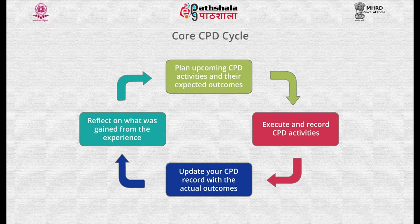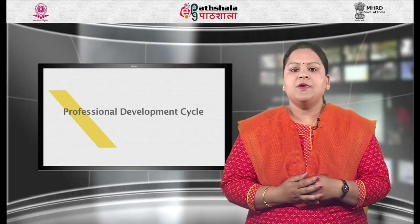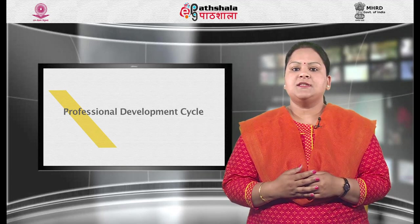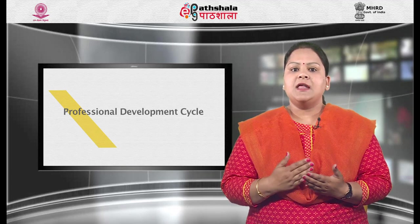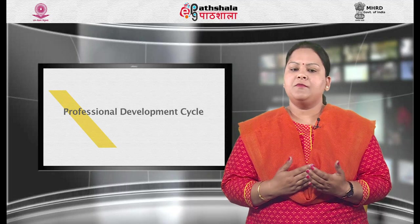As it is clear from the given flow chart, the continuous professional development cycle is a four-stage process in which you: number one, assess your learning needs; number two, plan the necessary learning activities to meet the needs you have identified; number three, take action on your planned activities; and finally, evaluate whether your activities have met your learning needs or not. This cyclic process helps the teachers to plan, execute and assess their professional development from time to time.